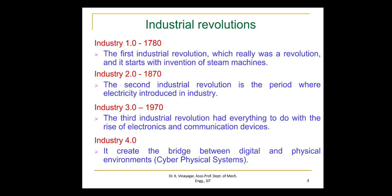Industry 3.0. In the 1970s, also called the Third Industrial Revolution, everything to do with the rise of electronics and communication devices — PLCs, sensors, computers, and computer networks — were introduced in assembly lines. It raised productivity through better connectivity. Industry 4.0 is the fourth revolution in the industrial field. It creates a bridge between digital and physical environments, that is, cyber-physical systems. It is the convergent process of IT and OT — information technology and operational technology.